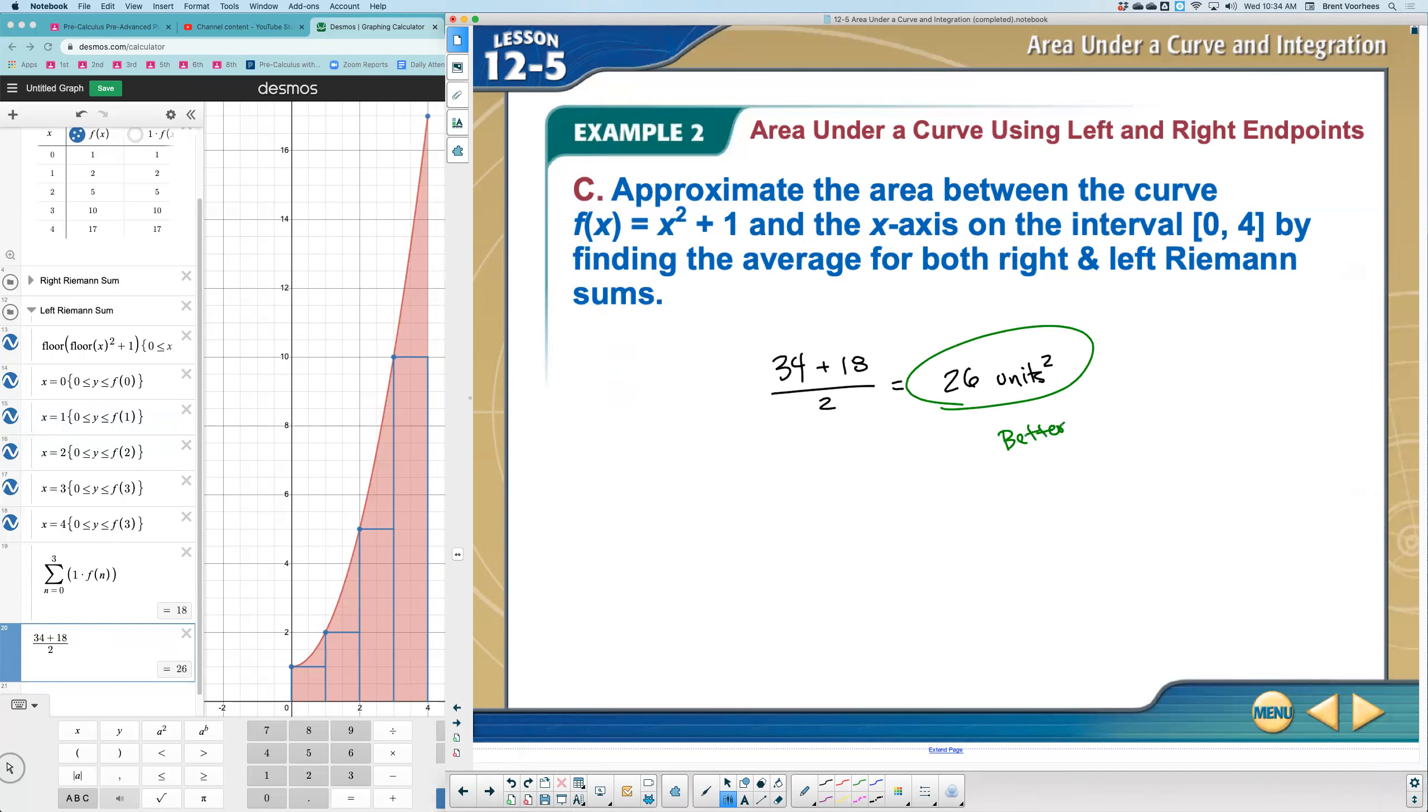Now, why does it have to be better? The first one we know for a fact was too high. The second one we knew was too low. So the average between must be more accurate than either one of the first two. So it's a better estimate, being somewhere in the middle of those two values.